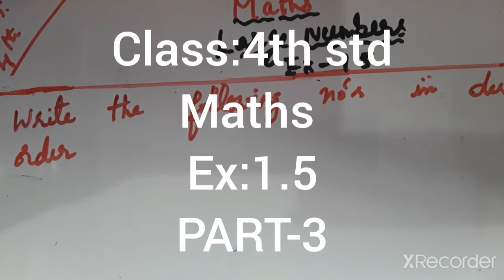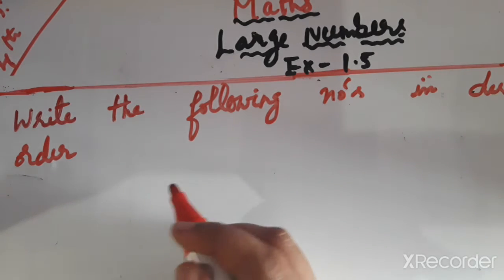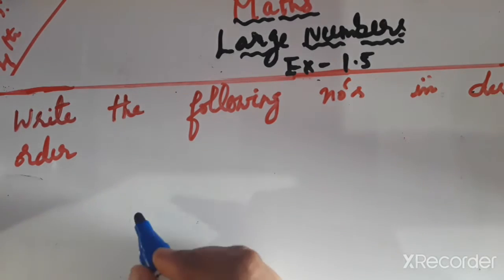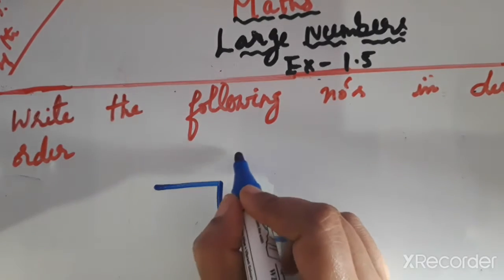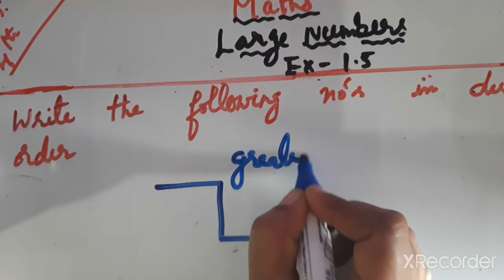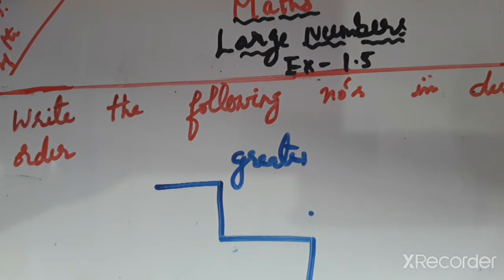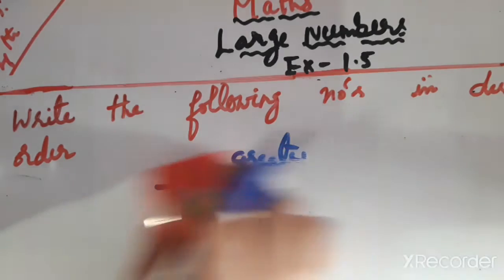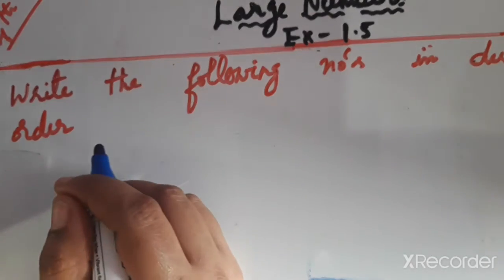Now write the following numbers in descending order. Descending order means greater number to smaller number. First we have to write the greater number, then the next in series until the lesser or smaller number. Descending order is also called decreasing order, and ascending order is also called increasing order.